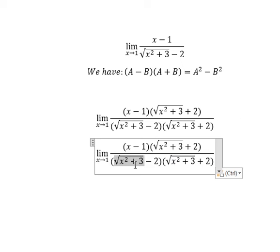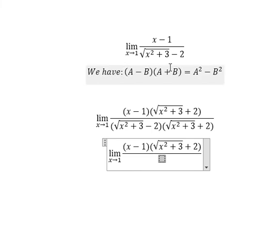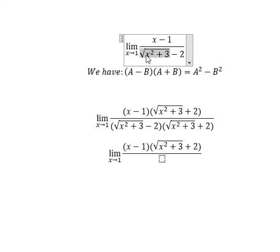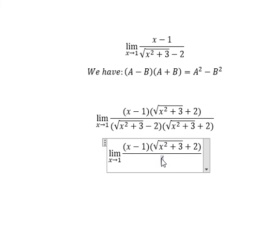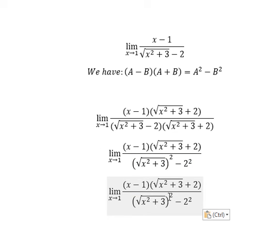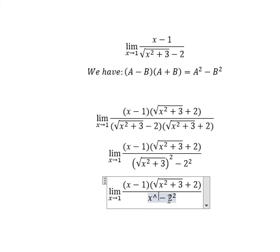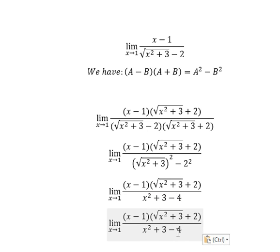So this one is simplified and we will have the square root to the power of two minus number two squared. So this one we will have x squared plus three, and this one is number four. Three minus four, you will have negative number one.